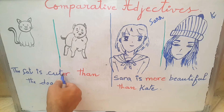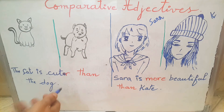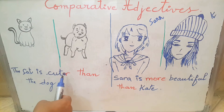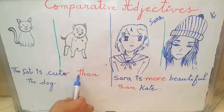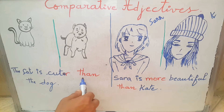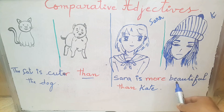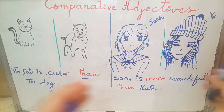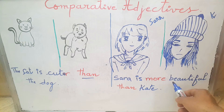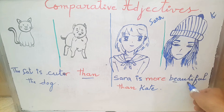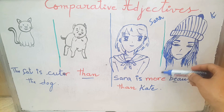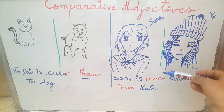Because I already have an E for cute, you just add an ER. For short adjectives you add ER. And beautiful is a long adjective — it's three syllables — so you add more before the adjective.